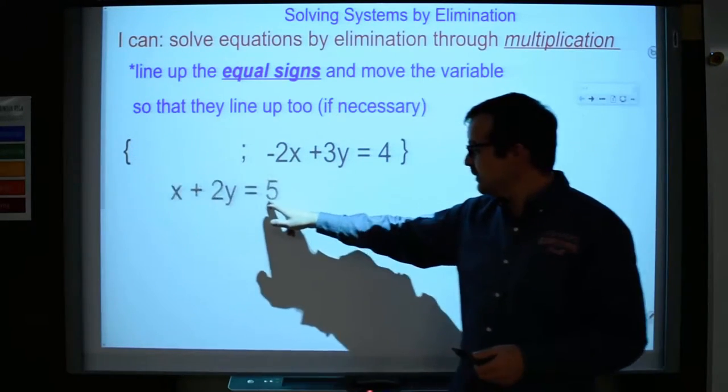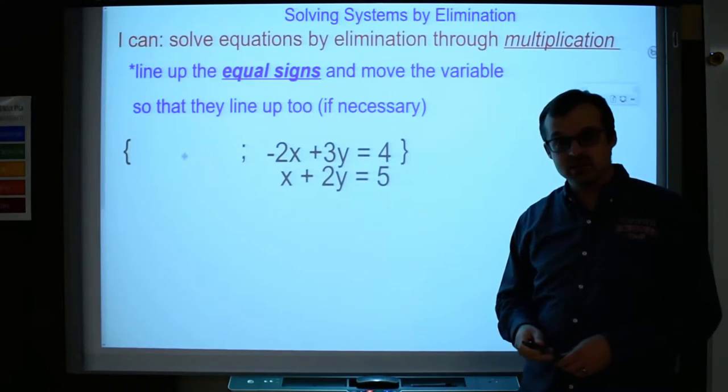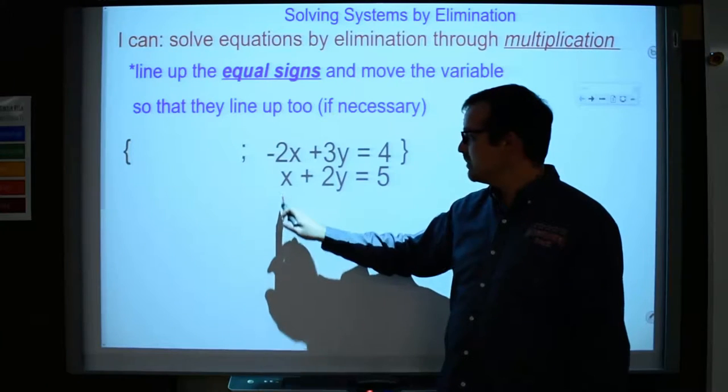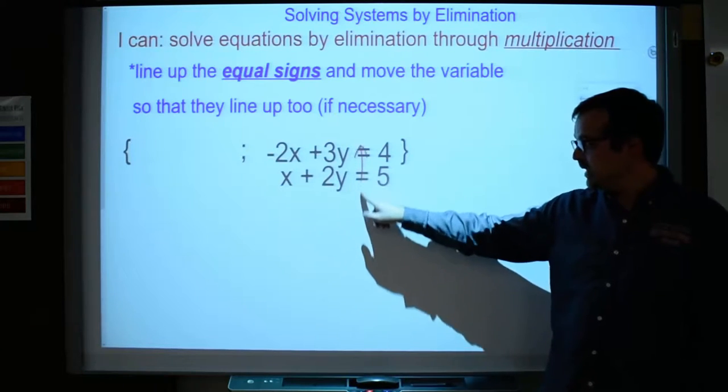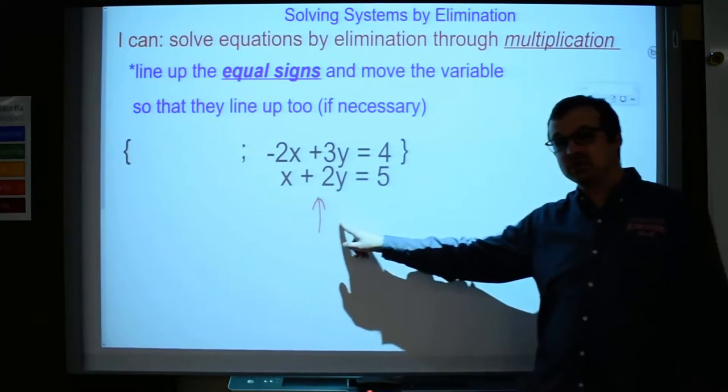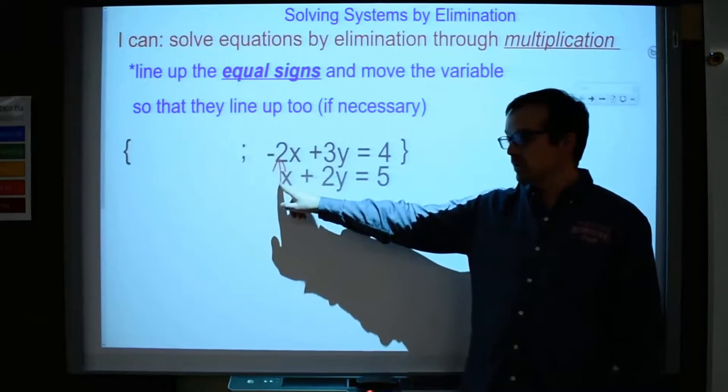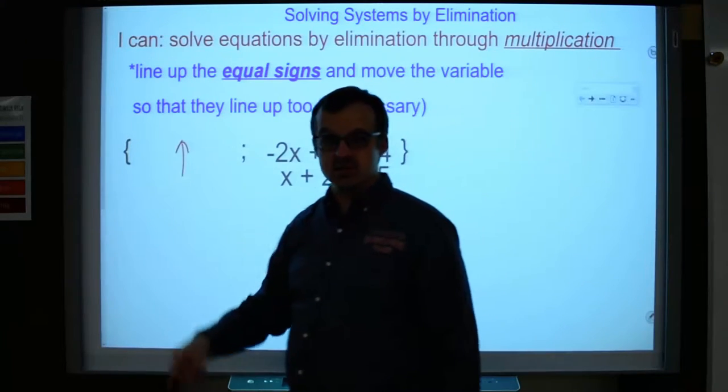So I can do that pretty easy with my board here. I'm going to line up my equal signs, but I'm also going to make sure that my x's are lined up like I have here, my y's are lined up, my equal signs are lined up, and these constants are lined up. It doesn't really matter what order these are lined up in, but we like standard form where it's ax plus by equals c every single time just to keep it consistent.